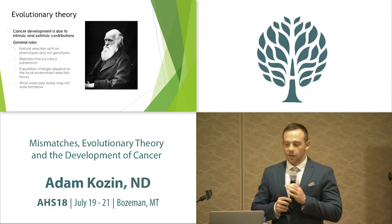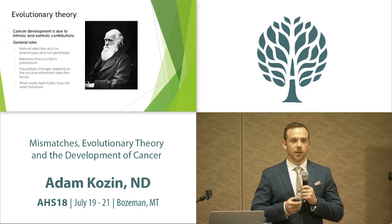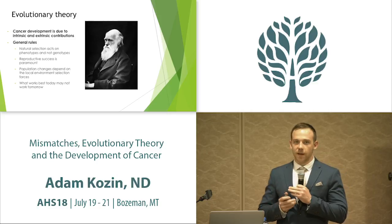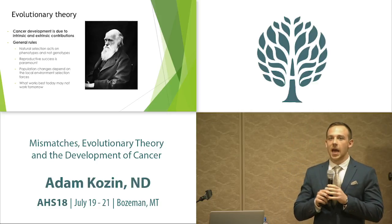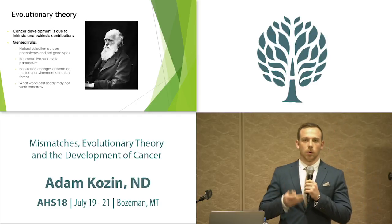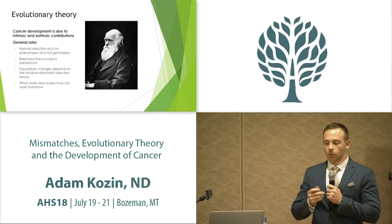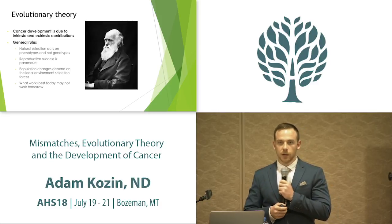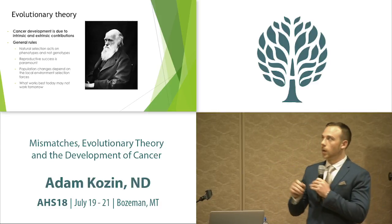To understand the evolutionary theory of cancer we have to understand Darwinian natural selection. It's been found that we can take evolution and population genetics and apply these to the tumor or clonal proliferation of cancer cells. There are some ground rules for Darwinian natural selection: number one is survival of the fittest.